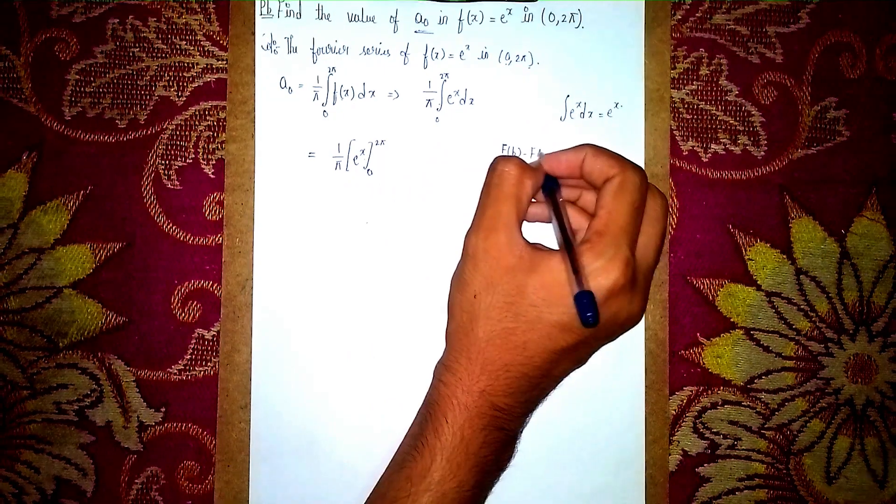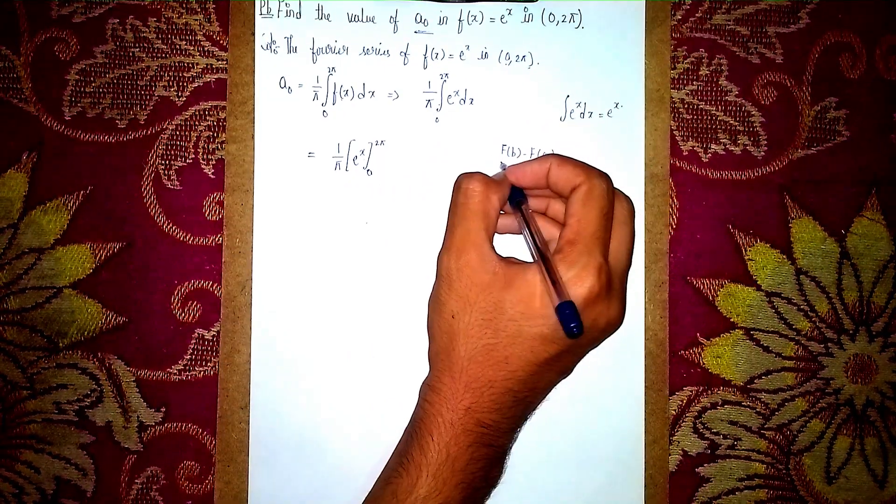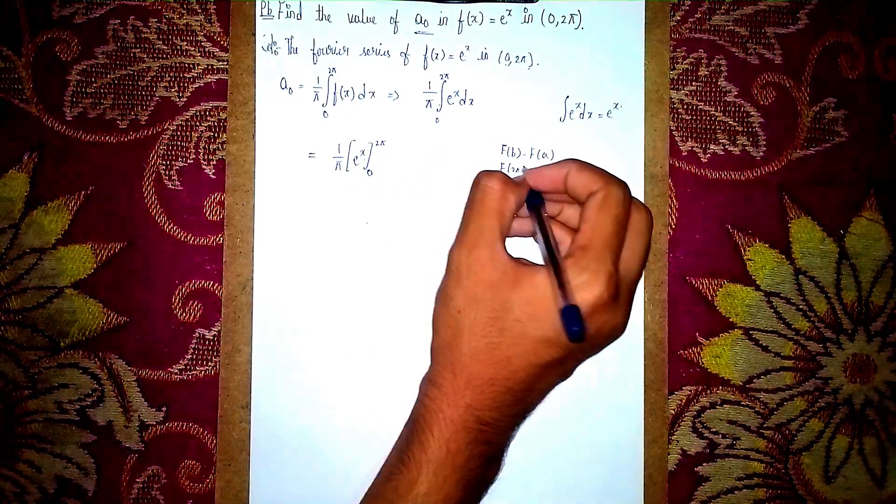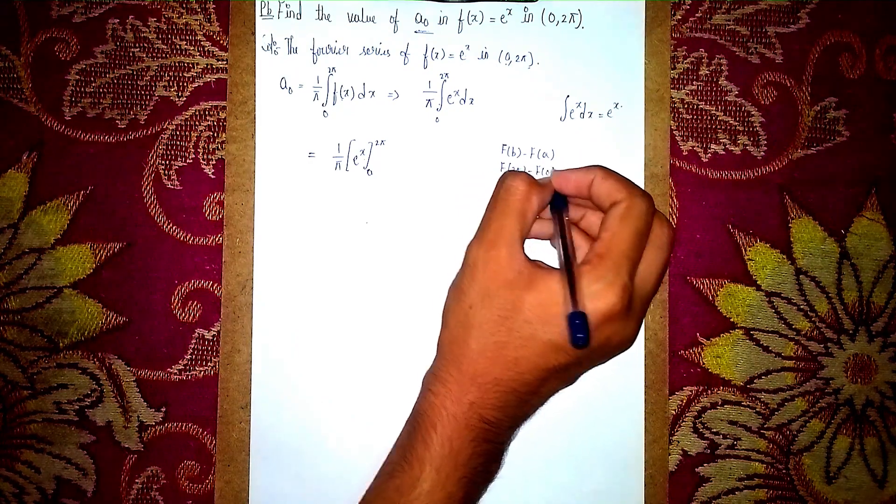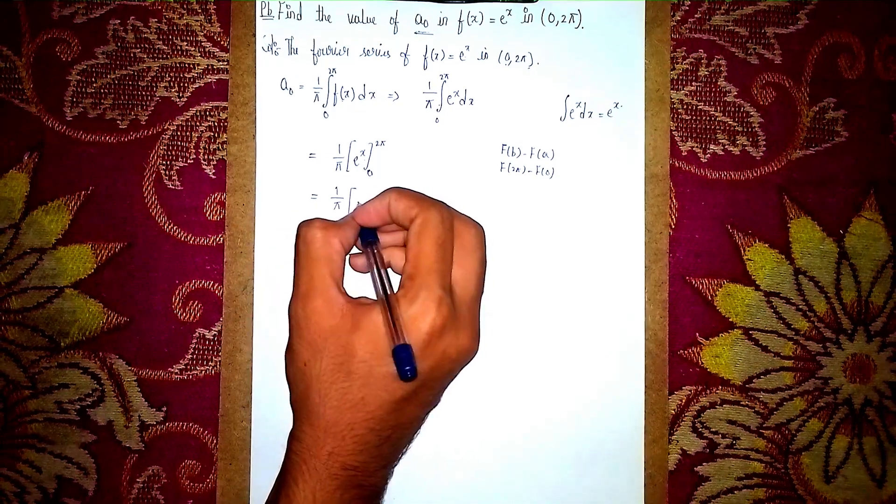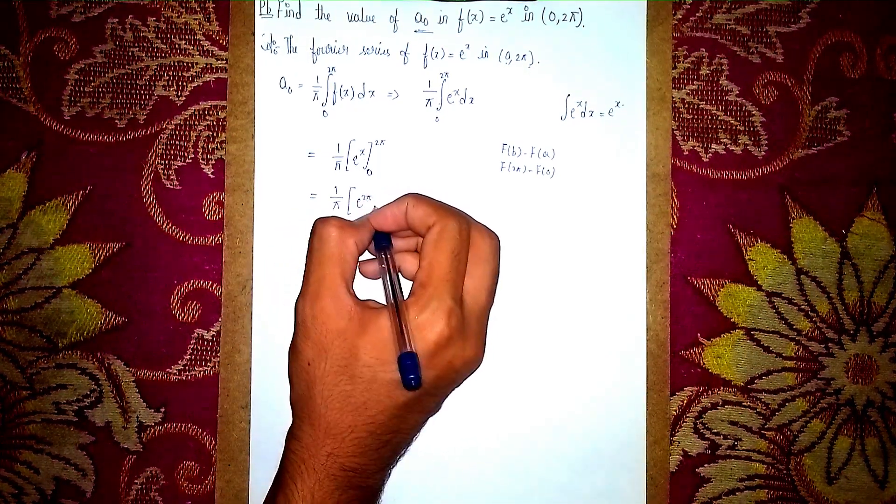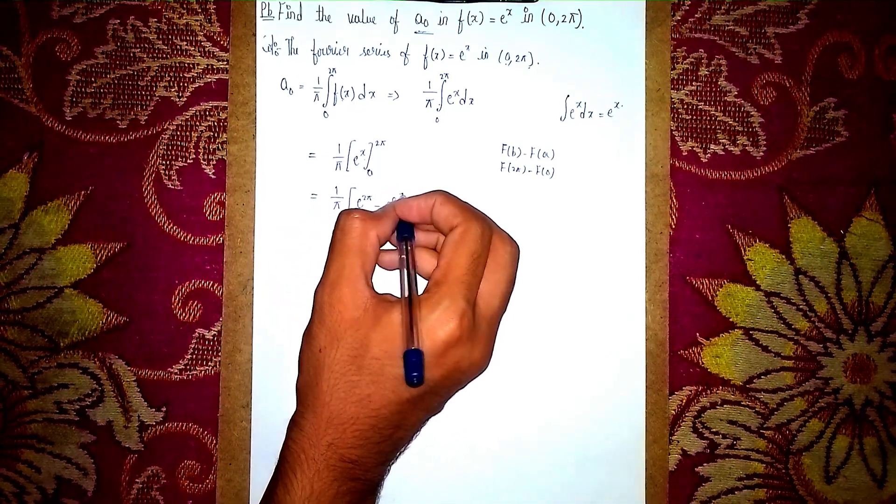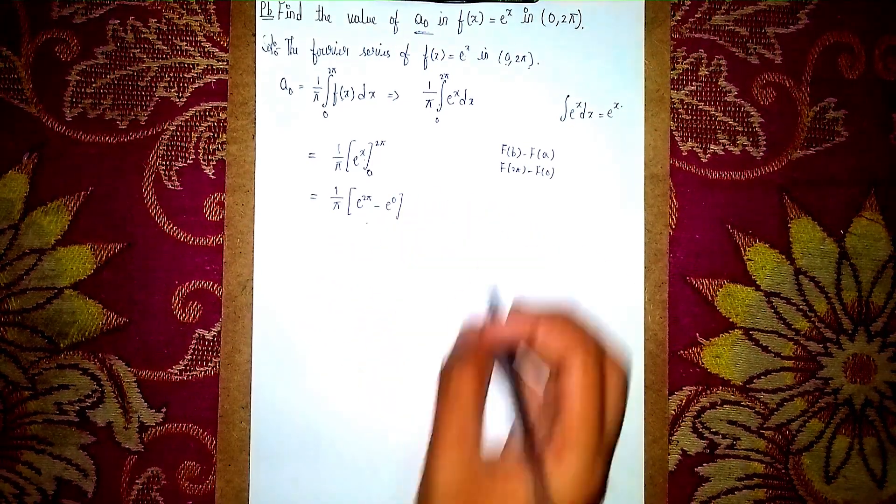b = 2π and a = 0. Now apply the limits, so it becomes (1/π)(e^(2π) - e^0). Remember...